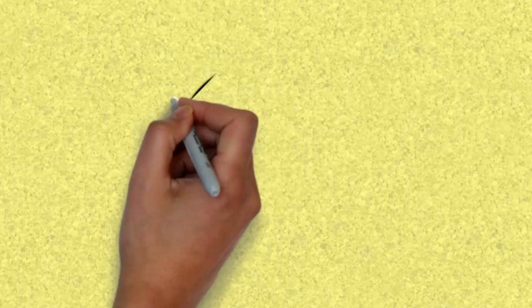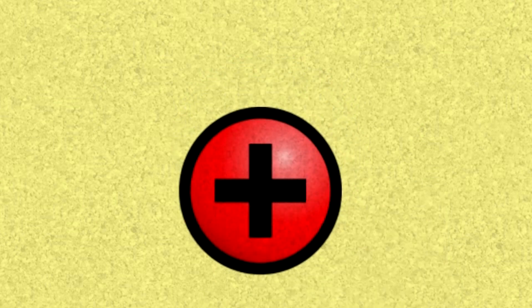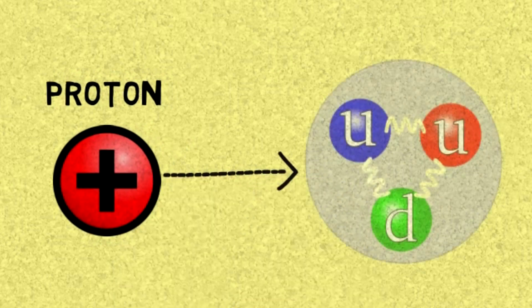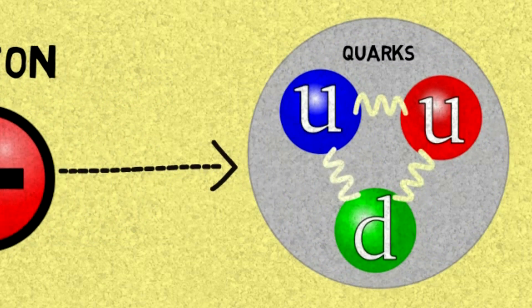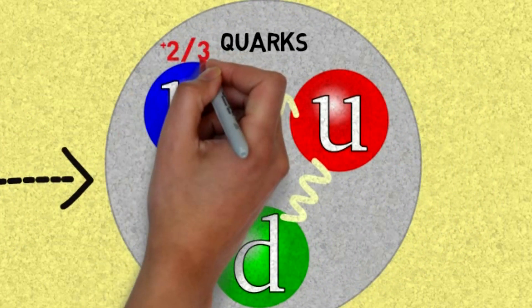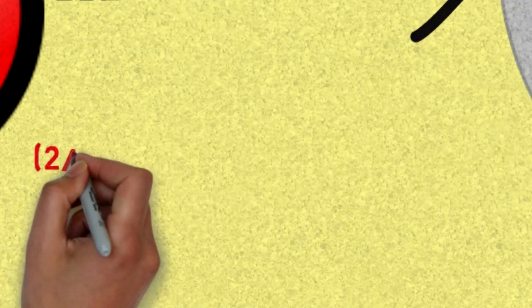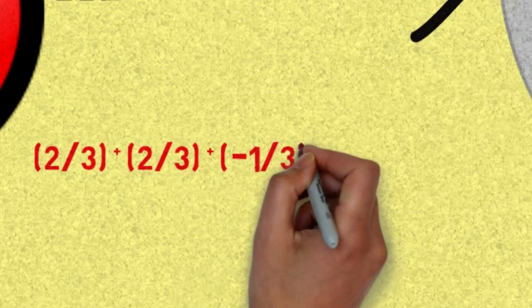To answer this specific question we can go in different directions. Take the proton, which has a positive charge — why? Inside the proton there are particles called quarks. A proton has three quarks: two up quarks and one down quark. Each quark has a fractional charge — an up quark has two-thirds of a positive charge, while a down quark has one-third of a negative charge. Combined, two up quarks and one down quark give a proton one whole positive charge.